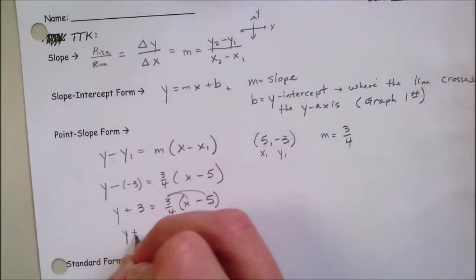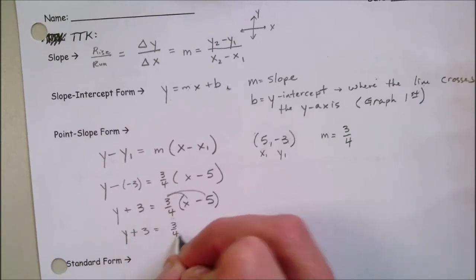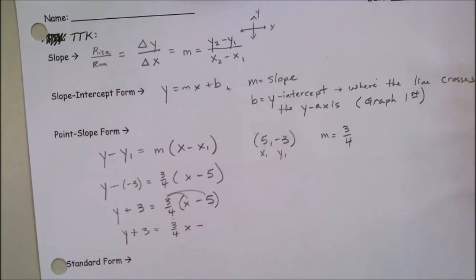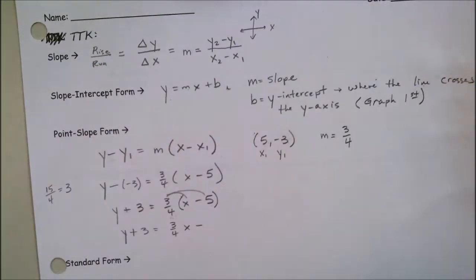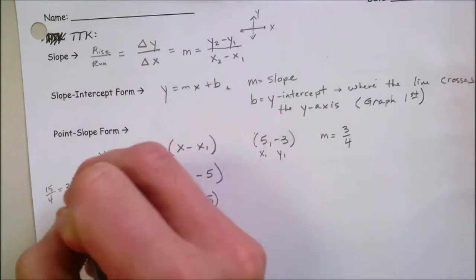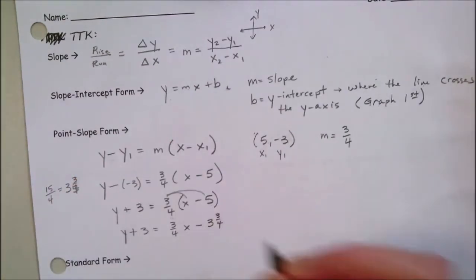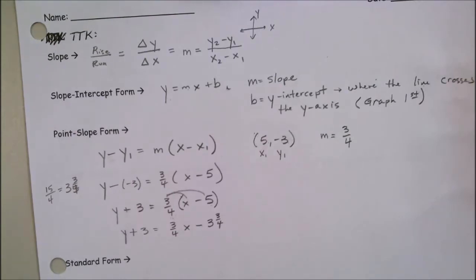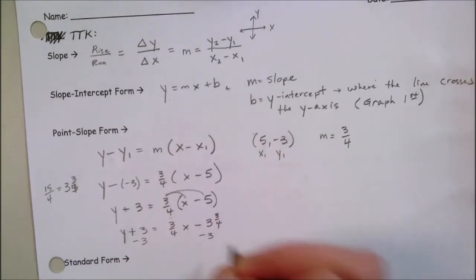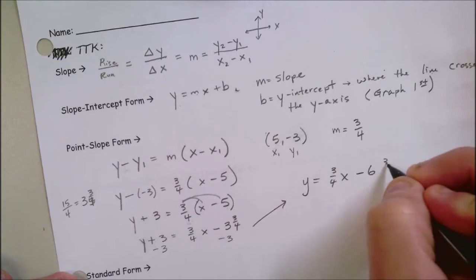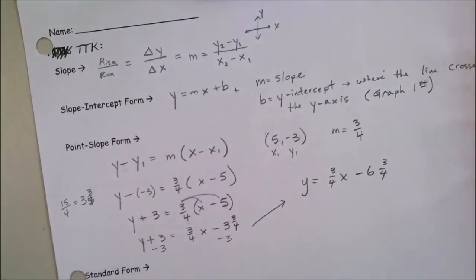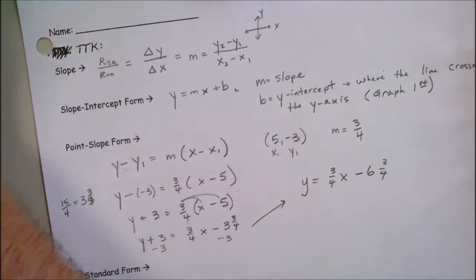If I want to solve for y and get it back into slope-intercept form: y plus 3 equals 3/4 x minus 15/4. Now 15/4 is 3 and 3/4. I subtract 3 from both sides, and that gives me y equals 3/4 x minus 6 and 3/4. If I've done my algebra correctly, I should have the same equation as the original.